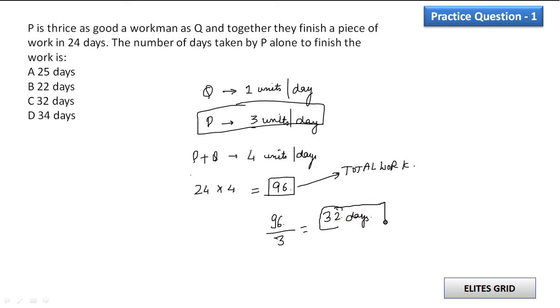This one will be our answer, so C part can be our answer. So the process is that Q do 1 unit per day, then P is thrice as good as a workman, so the units per day should be thrice, so 3 units. Now if we collaborate P and Q, then it will be equal to 4 units per day.